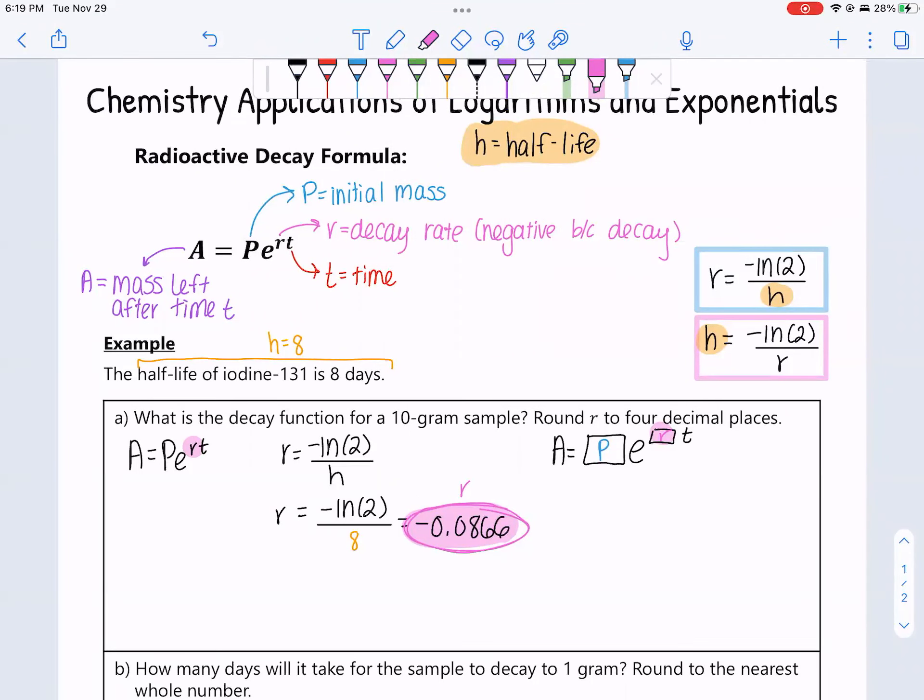Then we need to find P, and good news for us, it's a 10-gram sample. So P is 10. So that's everything. That covers everything. P is 10. R is negative 0.0866. That is all we need, so we plug it in. A is equal to our initial sample is 10 grams. E raised to the negative 0.0866 is our decay rate, and then there's a T. Bam. Decay function.